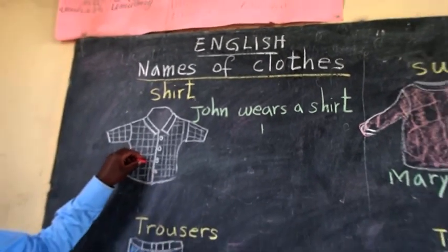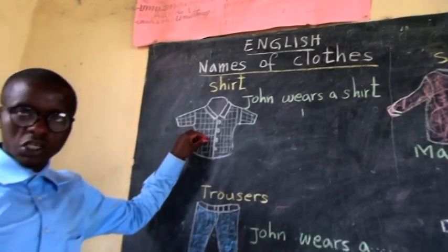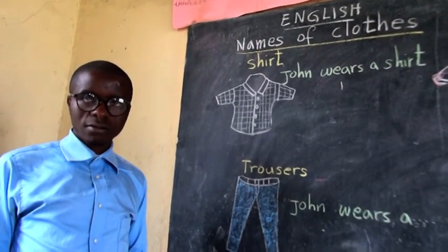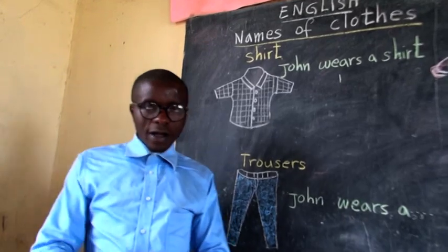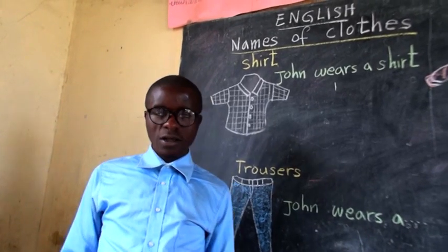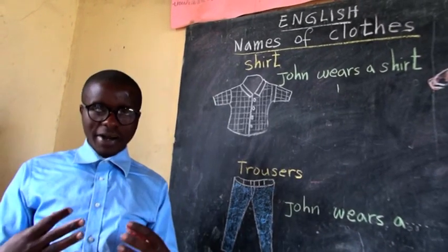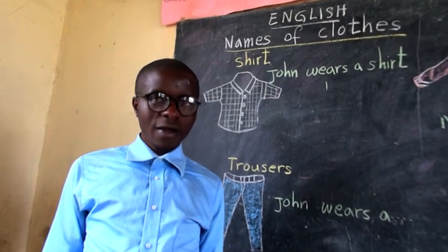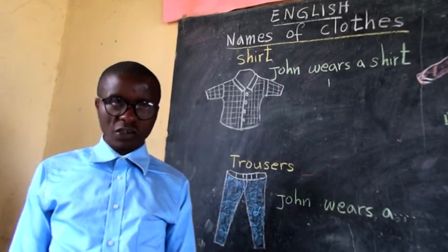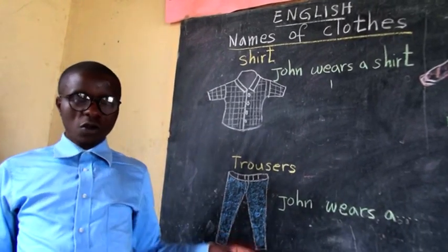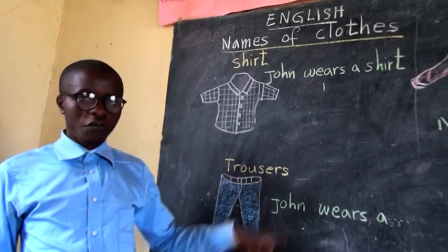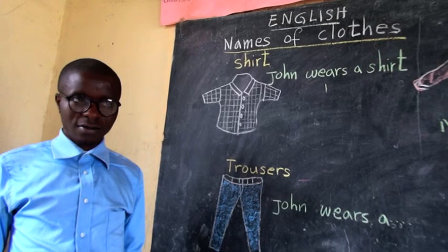This is a shirt. We are going to make a sentence using a shirt. We are going to create and compose a sentence using the names of clothes.